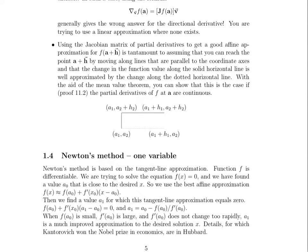Using the Jacobian matrix of partial derivatives to get a good affine approximation for function value at a particular point is the same as assuming that you can reach that particular point by moving along lines that are parallel to the coordinate axes. And that the change in the function along this solid horizontal line right here is pretty much the same as the change in the function along this dotted horizontal line down here. Now with the aid of the mean value theorem, you can actually show that this is the case if the partial derivatives of f at a are continuous, and we will be showing that later.